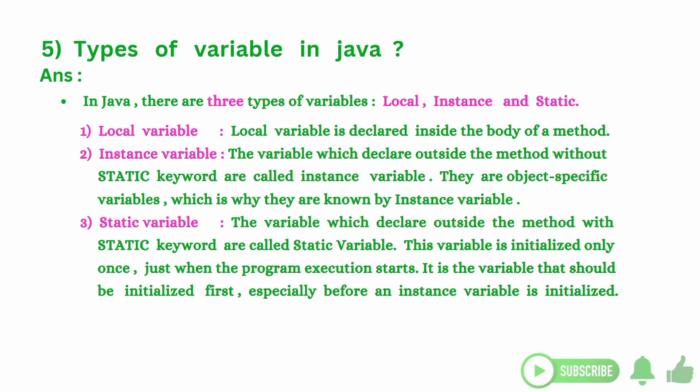Instance variable: the variables which are declared outside the method without the static keyword are called instance variables. They are object-specific variables, which is why they are known as instance variables.